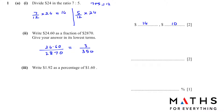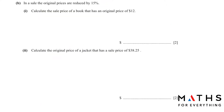Write 1.92 as a percentage of 1.60. When we want to write as a percentage, we multiply by 100. So first we write 1.92 over 1.60 and then multiply by 100. This will give us 120, so the answer is 120%.